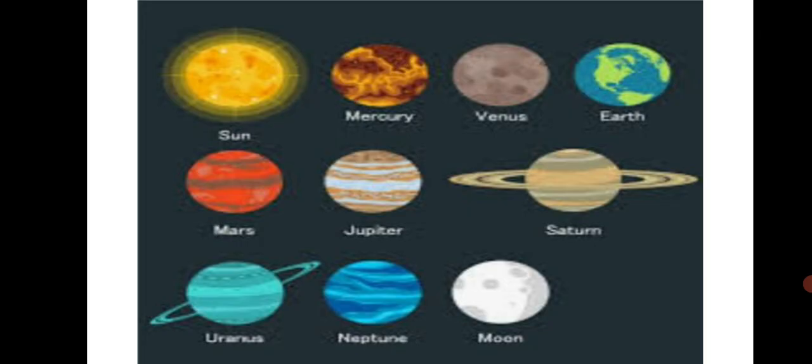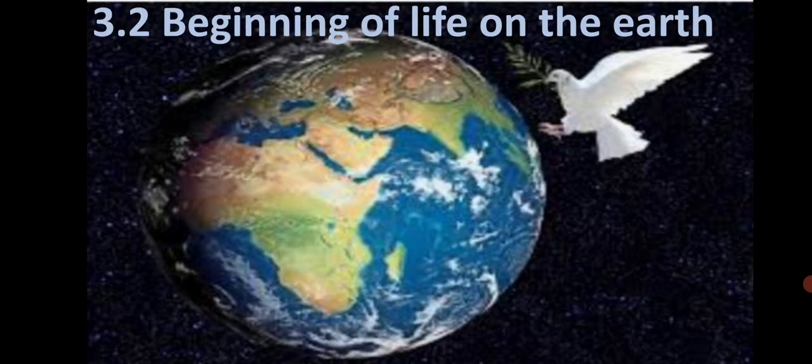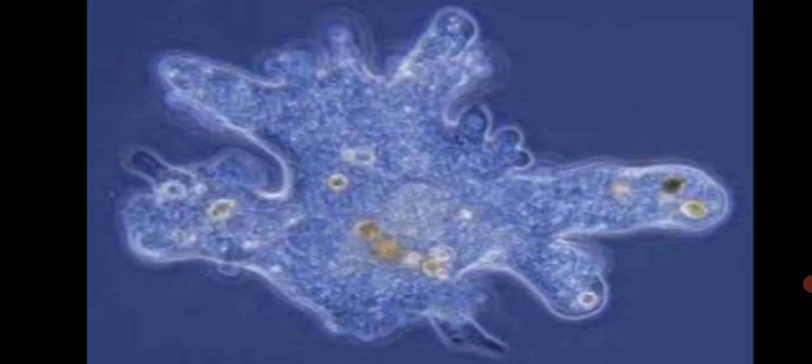Now let's learn about the beginning of life on the Earth. Among these planets, the Earth is the only planet where life is known to exist. After the formation of the Earth, it took about 80 crore years for its surface to cool down. As mentioned earlier, it was made up of hot gases, so it took a long time for the surface of the Earth to cool down and for water bodies to be formed on it.